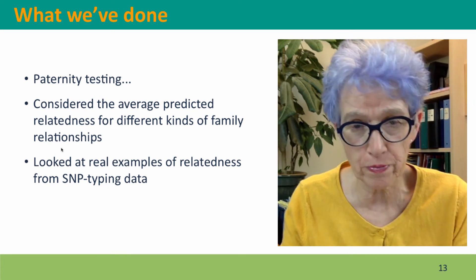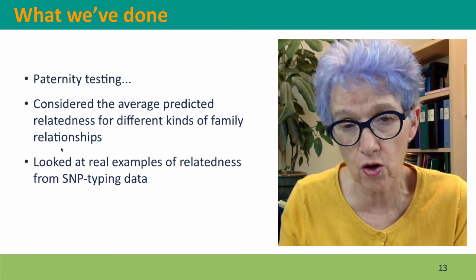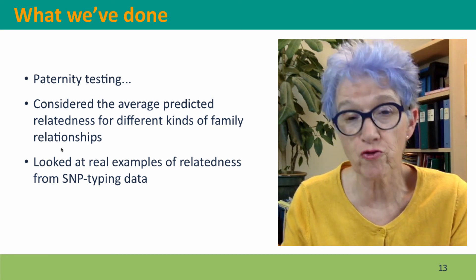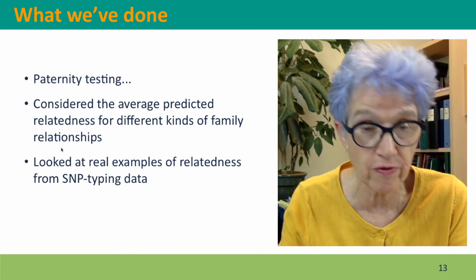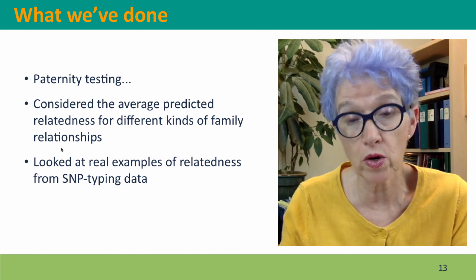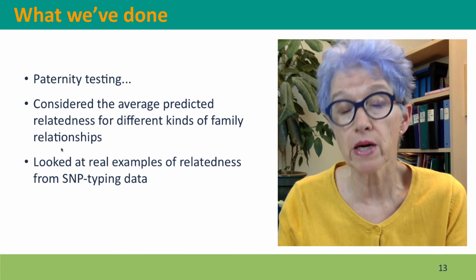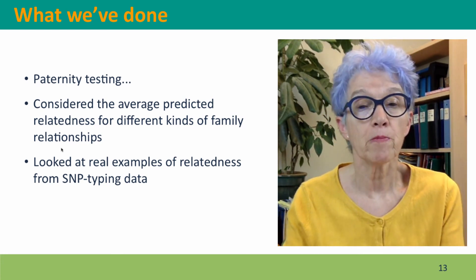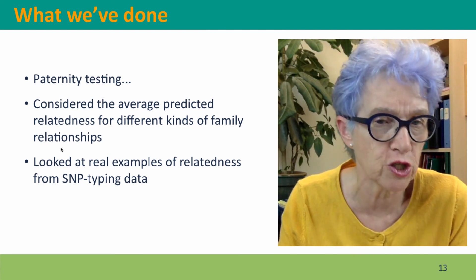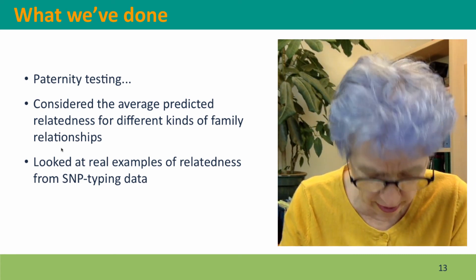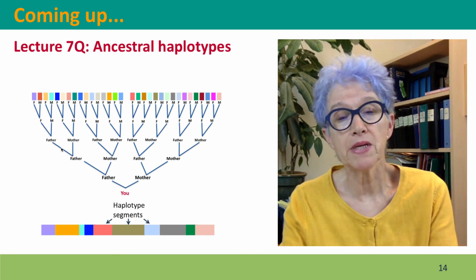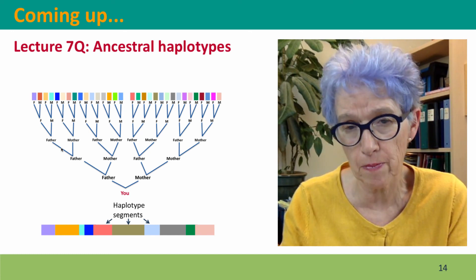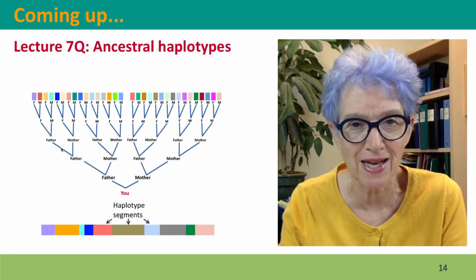So what we've done: we talked about paternity testing, how to think about DNA fingerprinting in the context of parent-child relationships. You can also extend this to more distant relationships — for instance, for immigration hearings where evidence of a family relationship is needed, such as proving that someone is your nephew. We considered the average predicted levels of relatedness for different kinds of family relationships, and then looked at what real examples of relatedness are like from real SNP typing data. Coming up next, we're going to continue thinking about relatedness, but move farther back in time to think about what happens to ancestral haplotypes — segments of DNA that we inherit from more distant ancestors. I hope to see you there.